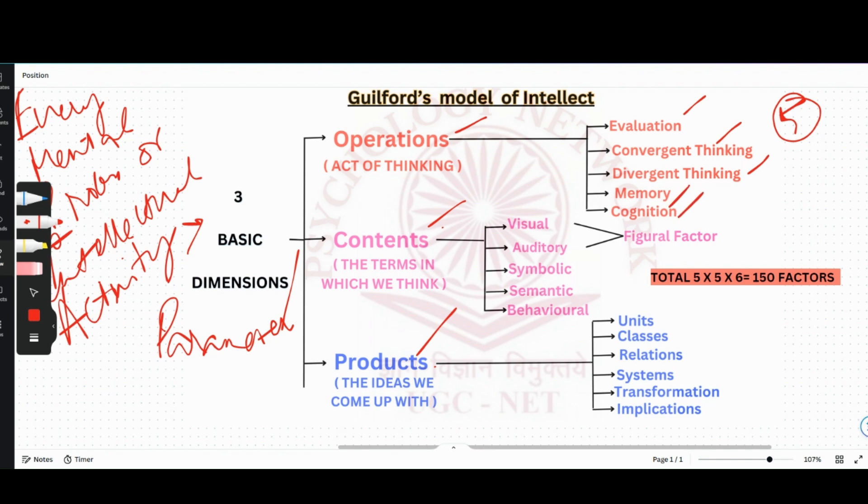Then comes your content. The content is the terms in which we think, such as words and symbols. How do we think? If I'm thinking of a red apple, I'm going to think in my visual spatial sketchpad visually. So this is my contents, the terms in which we think.